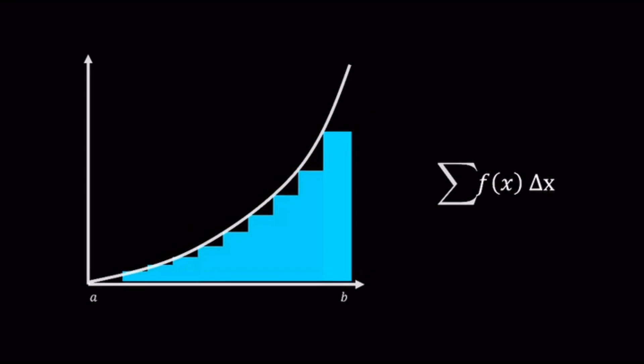The height of each rectangle is determined by the value of the function at that point. To find the area of each rectangle, you multiply its width by its height. Then, by summing these rectangles across the interval between two points, a and b, we get an estimate of the total area.